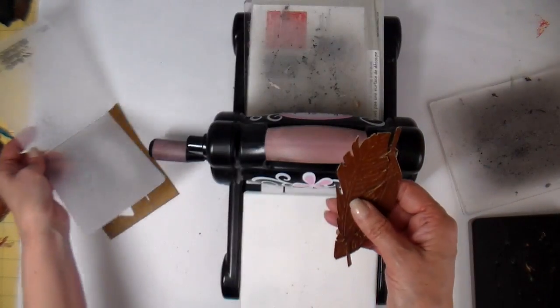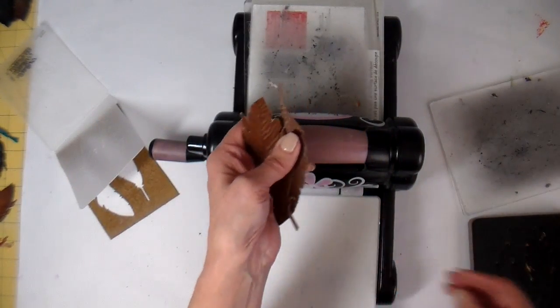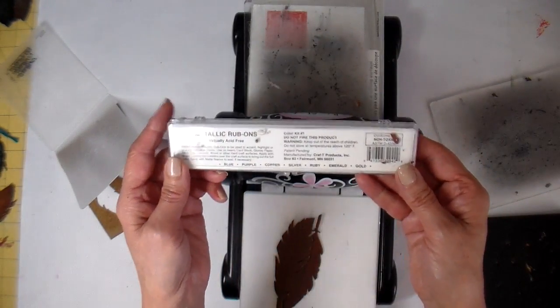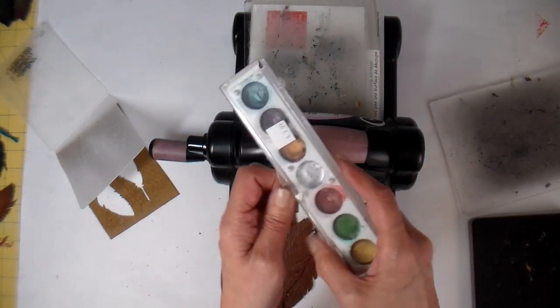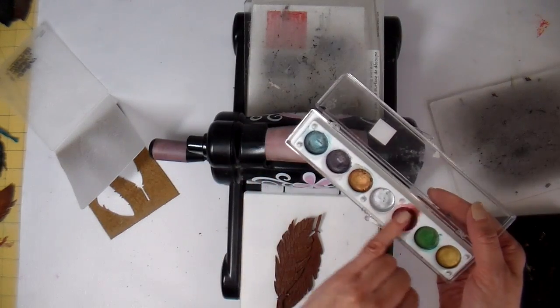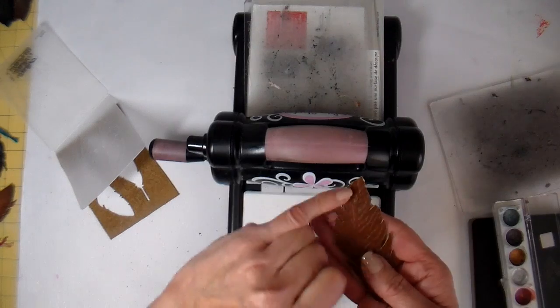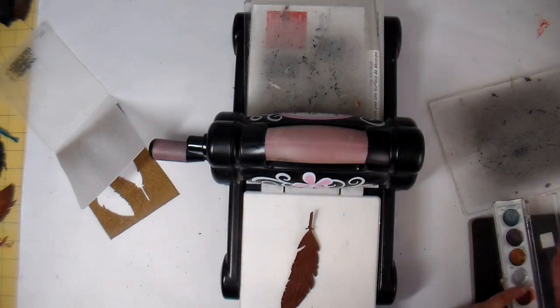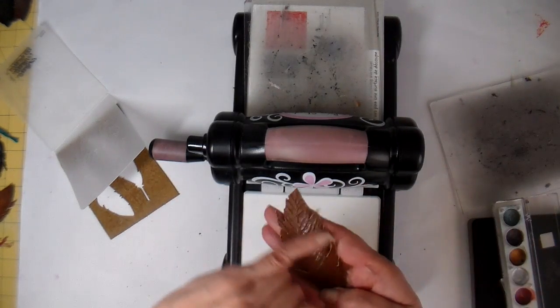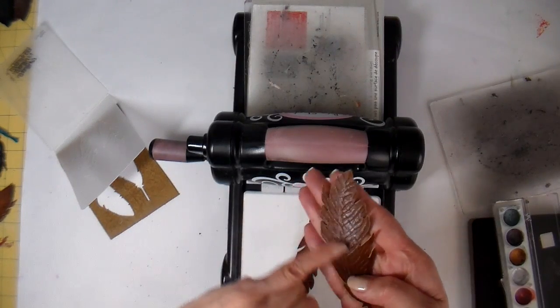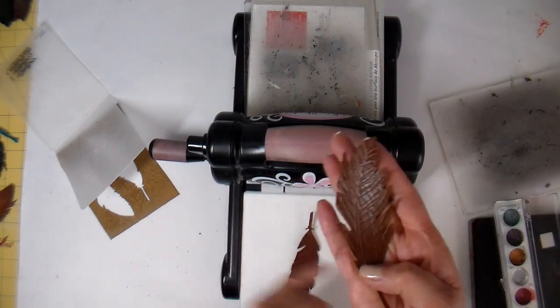And to kind of get this to show a little bit more, I've been using a metallic rub on with my finger and just kind of putting a little bit of color on the top of these feathers, just a little bit to kind of really bring out that vein look.